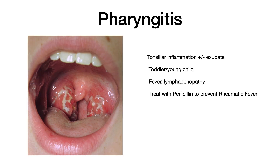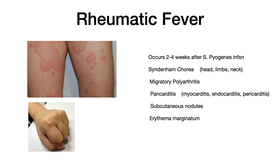Pharyngitis: you'll see tonsillar inflammation with or without exudate — a classic image for strep pharyngitis — usually in a toddler or young child, with non-specific symptoms like fever or lymphadenopathy. Treatment is penicillin. Importantly for Step 2 and beyond, treatment with penicillin is there to prevent rheumatic fever, because untreated Strep pyogenes infection leads to rheumatic fever.